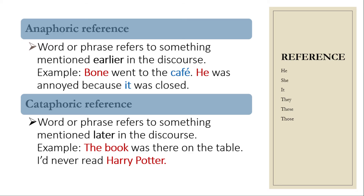For example of anaphoric reference: 'Bon went to the cafe. He was annoyed because it was closed.' Cataphoric reference is the reference to something mentioned later. For example: 'The book was there on the table. I've never read Harry Potter.'